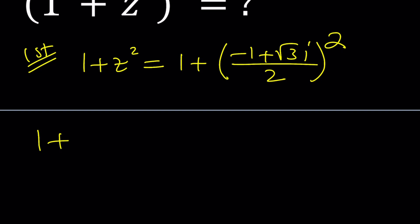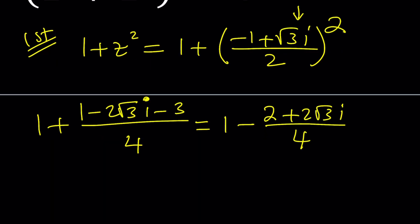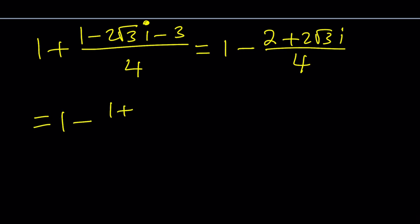So square this. I'm going to square negative 1 and that's going to be a 1, and when I multiply the 2ab thing, minus 2 root 3i, and when you square root 3i you're going to get 3i squared which is negative 3. All of that is divided by 4. Let's go ahead and simplify this a little bit. 1 minus 3 is negative 2, so I'm going to be able to put it as negative 2 plus 2 root 3i divided by 4.